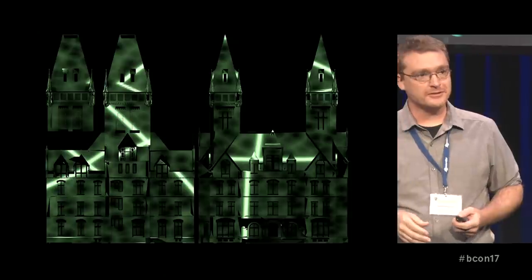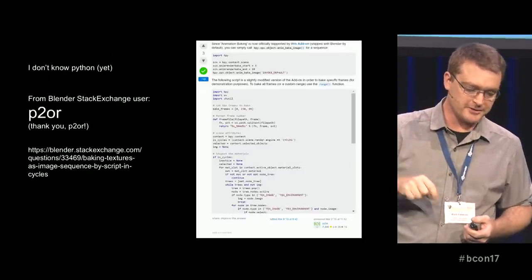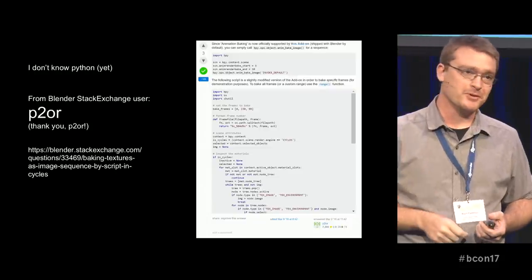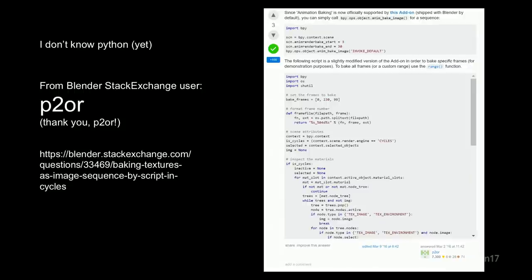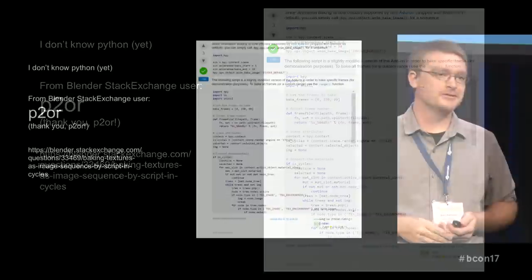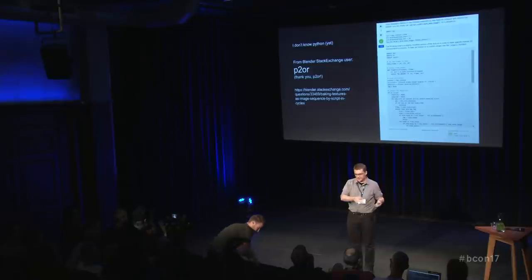So I Googled and Googled until on Blender Stack Exchange, an anonymous user named Ptor had posted a script. Thank you, Ptor — I don't know who you are. This script allowed me to bake a texture sequence. I pasted the script and tweaked it a little in the script window, hit run script. You have to bake one texture first, and Blender completely freezes while processing the bake, so you're not sure if it's working — but you open up the folder and see the files piling up, and that way you can know if it's working.